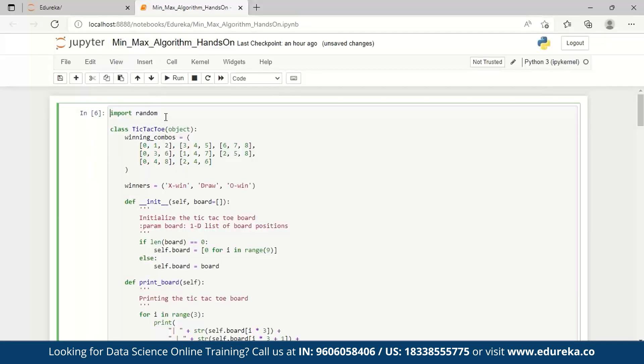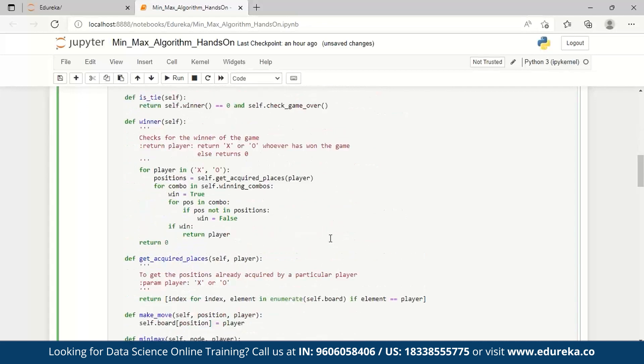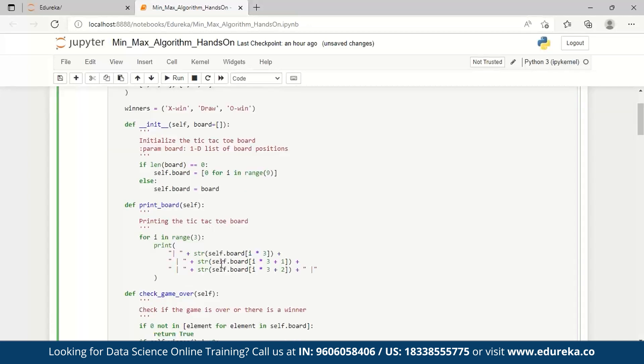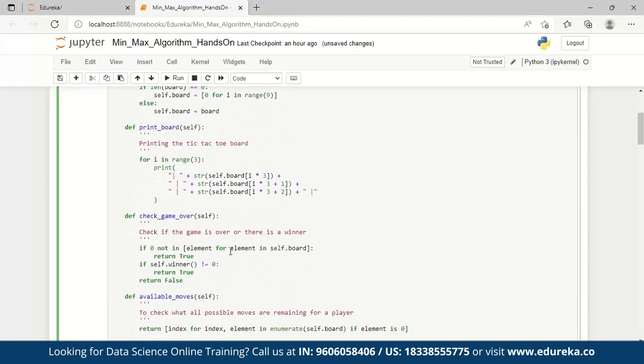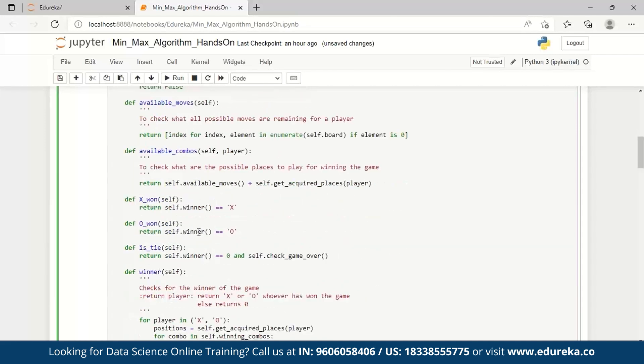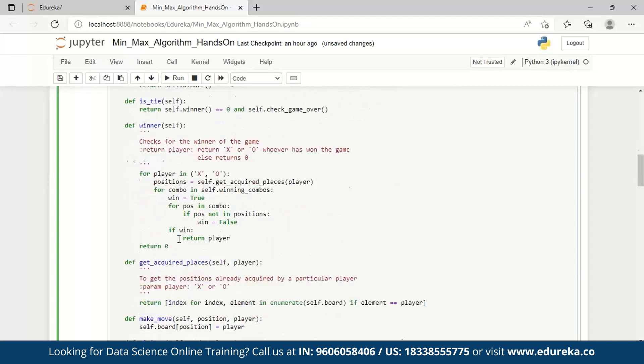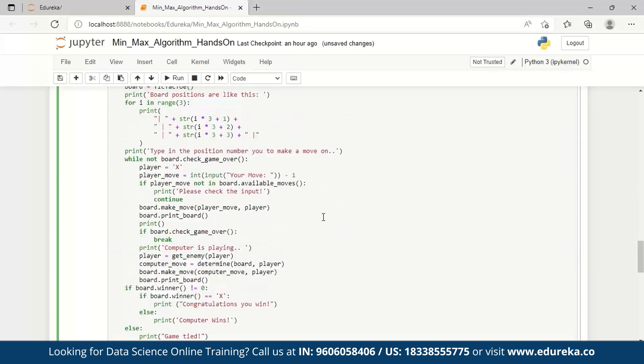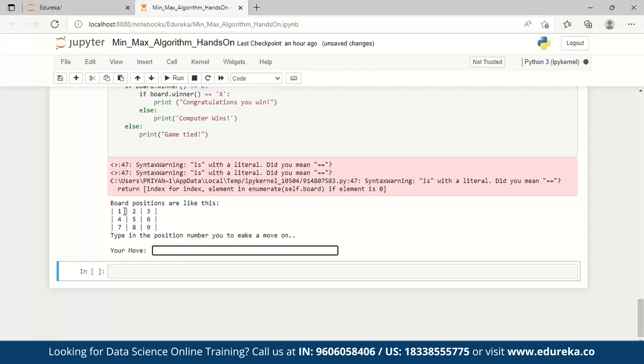So we are here at our Jupyter notebook and we will import random and create a class. This code is a little long because we are defining various functions and a class instance. First we define the winning combos - all the combinations of tic-tac-toe. The winners will be X win, draw, and O win. We create various functions: check game over, available moves, available combos, X win, O win, whether there's a tie, the winner, get required places, make moves, MinMax and so on. You can get this on GitHub. When we run this, it is asking your move. We have these moves one through nine. Suppose I give move three.